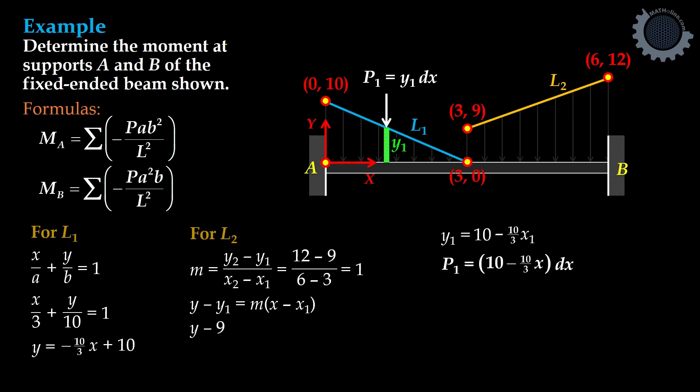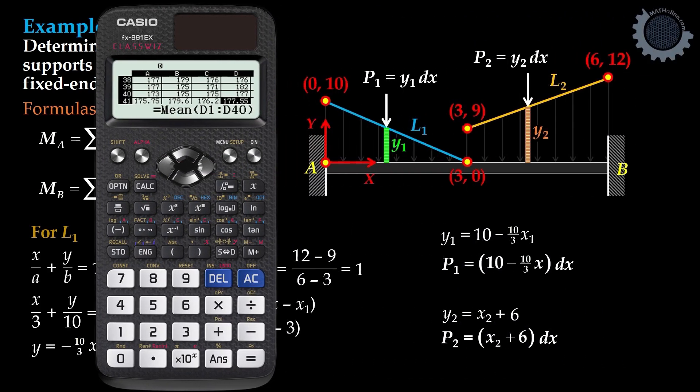Y minus 9 is equal to slope 1. Our X1 is 3. Rearranged, we have the value of X plus 6. The Y2 therefore is equal to X2 plus 6. And the P2 is given by X2 plus 6 DX.